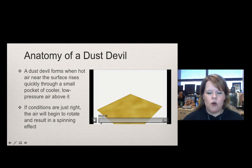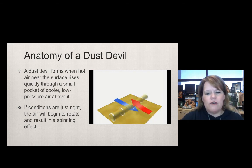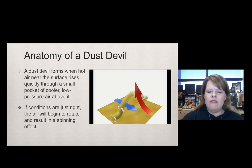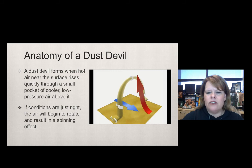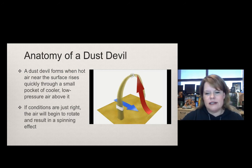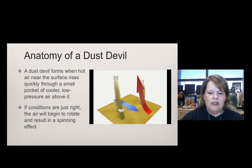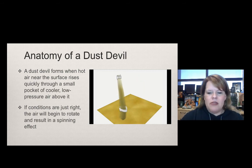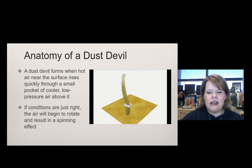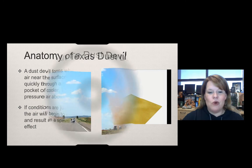A dust devil forms when hot air near the surface rises quickly through a small pocket of cooler low-pressure air above it. If the conditions are just right, the air will begin to rotate, creating a spinning effect. You can see it starting to spin and form a dust devil. They can last a few seconds to a few minutes — I've seen them dissipate on the spot.